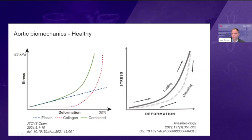The other common finding is that a hysteresis is formed. When we stretch or load the tissue and then unload it, the line doesn't follow itself — there's a space in between the two curves. That space is what we call energy loss, and that energy loss is representative of the viscoelastic properties of the aorta.